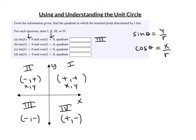On the next one, I want sine to be positive — greater than 0 — and cosine to be negative. Sine positive means y is positive, putting us in quadrants 1 and 2. Cosine negative means x is negative, so the only quadrant that fits both is quadrant 2. For part c, where is sine greater than 0 and cosine positive? I want both x and y to be positive. That's quadrant 1.